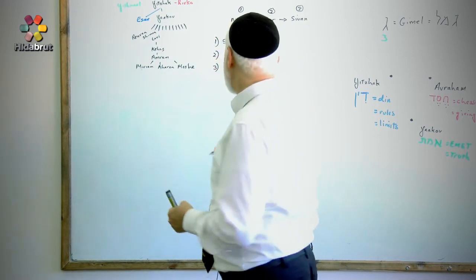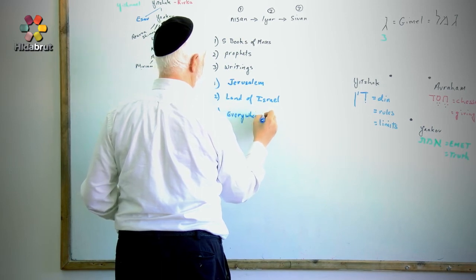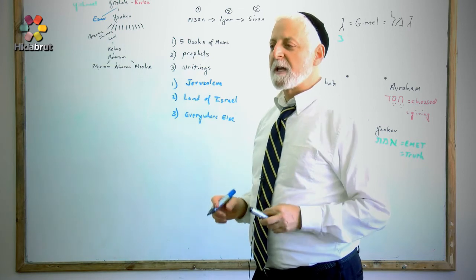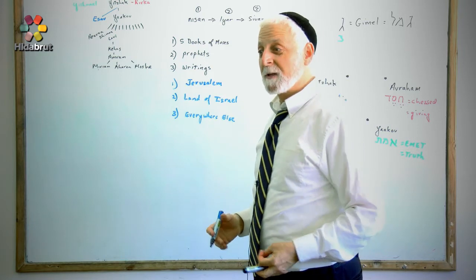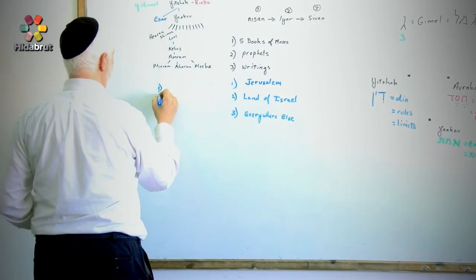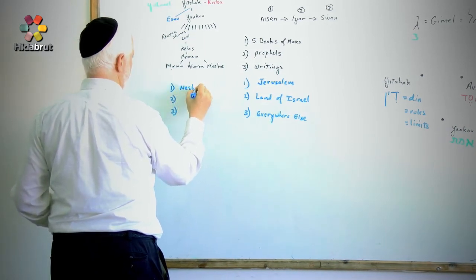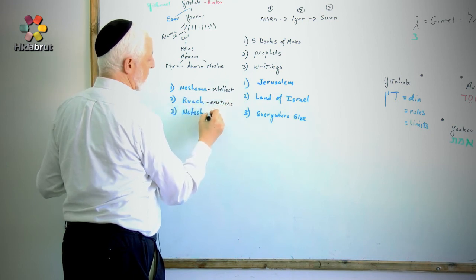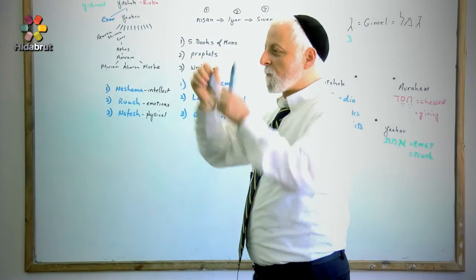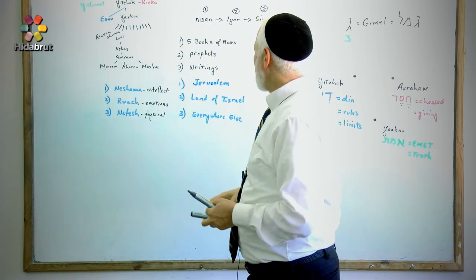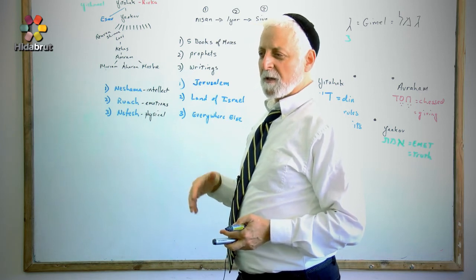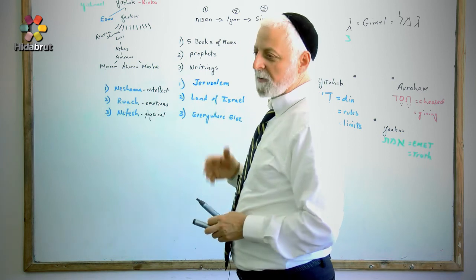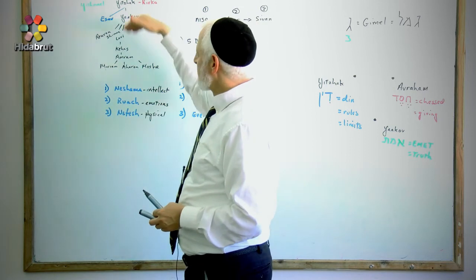In terms of holiness of locations, there is the holiness of Jerusalem — highest — then the holiness of the land of Israel, then everywhere else. Decision making in a human being distills down to the bottom three levels of your soul: Nefesh, Ruach, and Neshama. Neshama represents intellectual decisions, Ruach represents emotional decision making, and Nefesh is the physical side of decision making. The Talmud says the world stands on three things: learning Torah, prayer, and acts of kindness. You can find many examples of threes in Judaism — the three holidays Pesach, Shavuot, Sukkot — the list goes on.